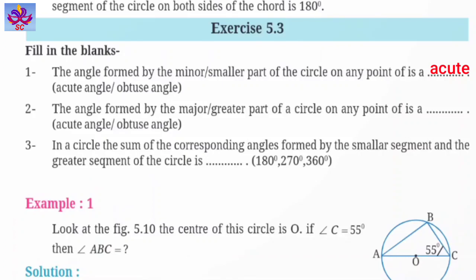Second is given, the angle formed by the major or greater part of a circle on any point of is a blank - acute angle or obtuse angle. तो यह just first का opposite है. किसी circle में उसके major या greater part से, उसके किसी point पर बनने वाला जो angle है, वो obtuse angle होता है, तो यहाँ पर हम fill करेंगे obtuse angle.